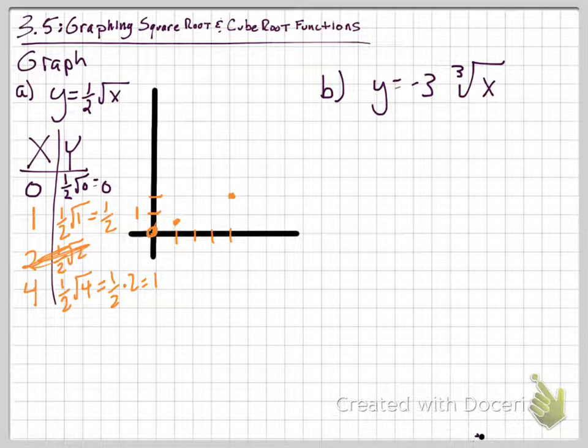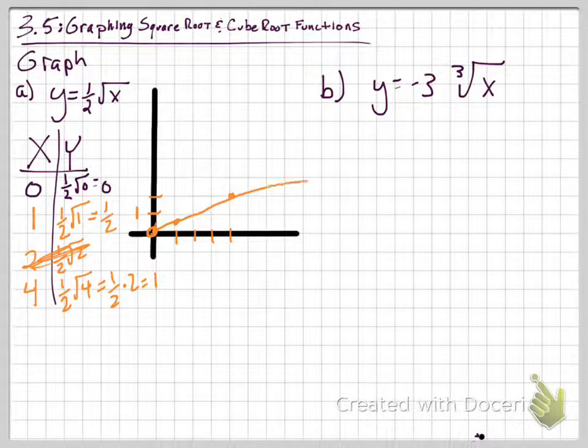Now we could continue to plot more points, but the pattern would look something like this. We start at the origin and go upwards on a smooth curve over and to the right. And this thing gradually increases and increases if we go far enough to the right. We'll talk a little bit about the domain and range for these things tomorrow in class.